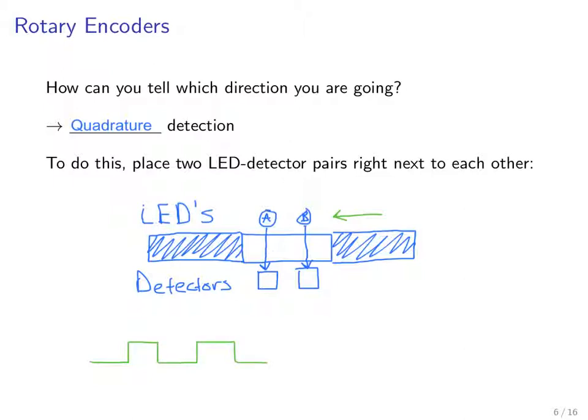If the wheel is moving this way, then you're going to have detector B leading detector A. The signal from B is going to lead that from A. So B is going to hit the dark region first, and A is going to be delayed. As we move into this dark region, B will transition from light to dark before A will transition.